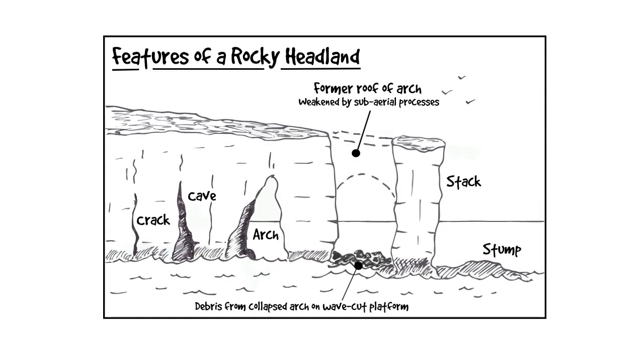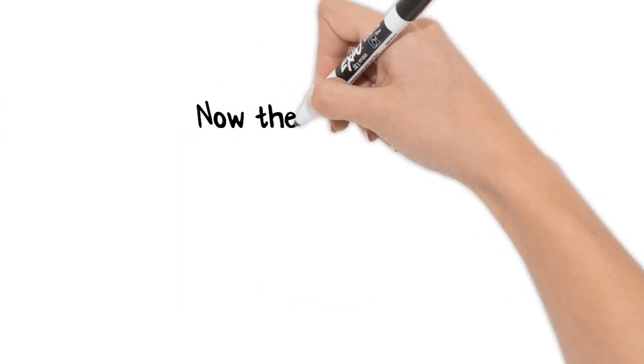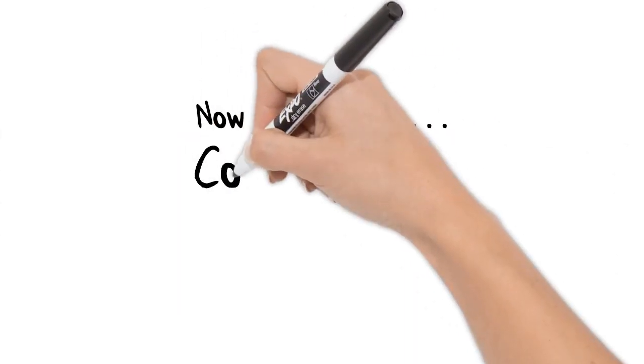There we have it. There's our diagram with our labeled features. The next thing you need to do, which of course is the best bit, you get to color it in.